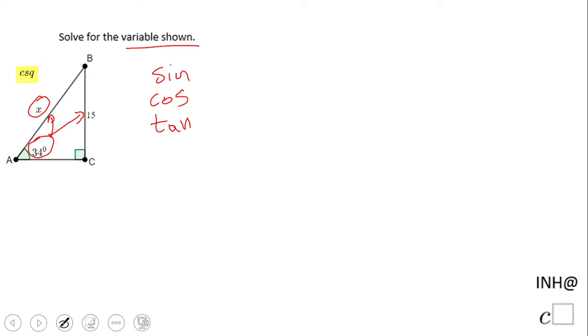we're looking for the hypotenuse. So we're going to have sine of 34 degrees equals 15 over X, which is right, because the definition of sine is opposite leg over hypotenuse. So how are we going to solve that?